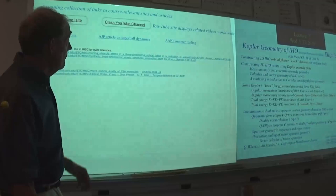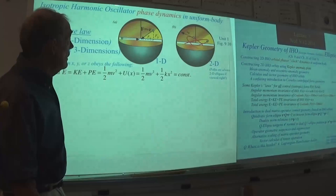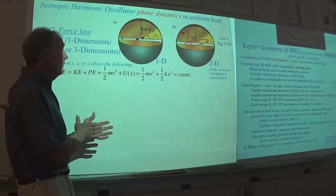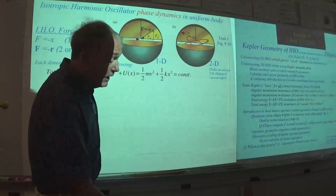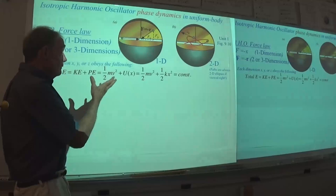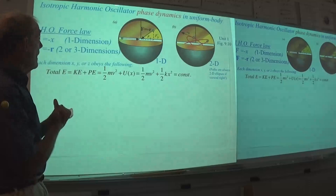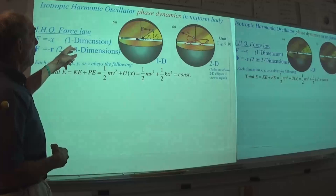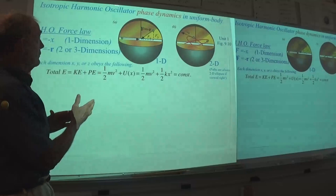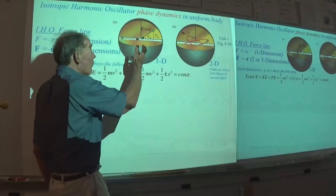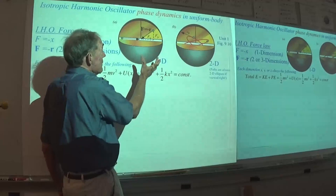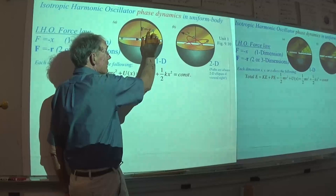As usual, there are some links here to things we'll do later. The basic idea of the isotropic harmonic oscillator that we get — if we have a uniform gravitational body or a uniform electrostatic collection of uniform density charge — is this one-dimensional force law. We've scaled everything to geometrical units.